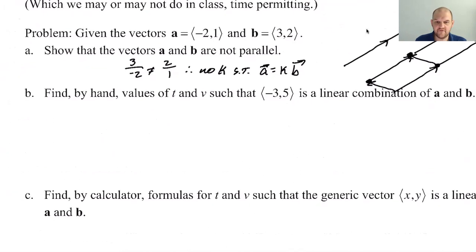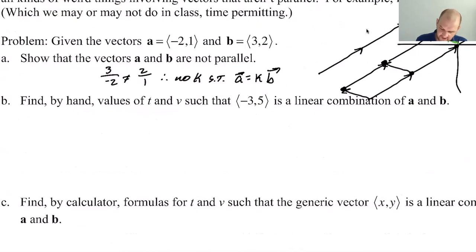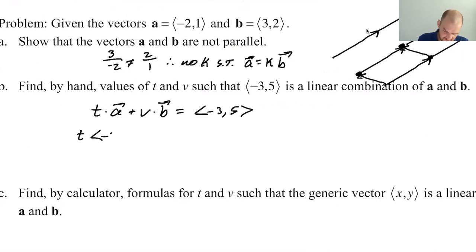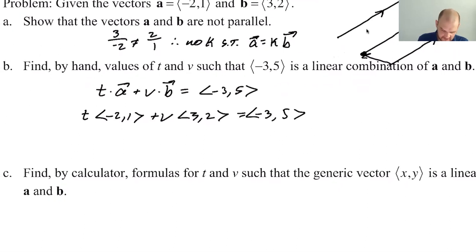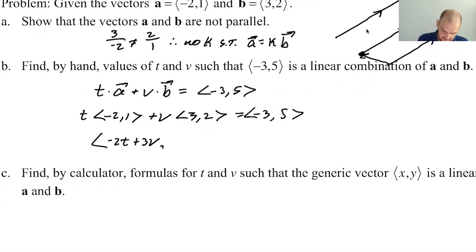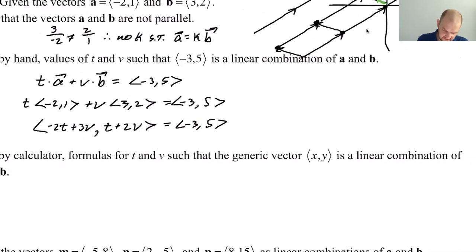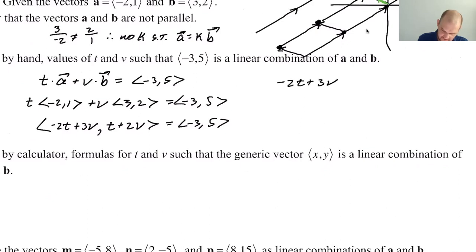So let's show these aren't parallel. So I'm going to say that 3 divided by negative 2 does not equal 2 divided by 1. Therefore, there is no K such that A equals K times B. So they are not parallel. So definitely not parallel. So now, find by hand values of T and V such that negative 3, 5 is a linear combination of A and B. So what we're saying is T times A plus V times B should be equal to negative 3, 5.